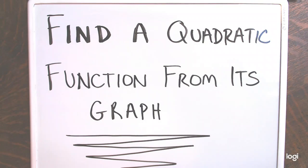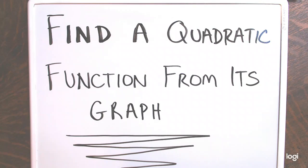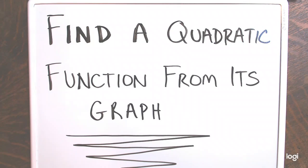Hello and welcome to this video on finding a quadratic function from its graph. In this video we're going to see graphs of parabolas — graphs of quadratic functions — a couple of examples. In those graphs you'll be given the vertex of the parabola, either the highest point if it's opening down or the lowest point if it's opening up. You'll be given the vertex and at least one other ordered pair on the graph. We're going to start off by writing the equation in what's called the vertex form, which I covered in a previous video.